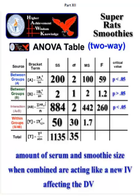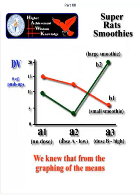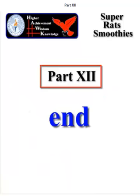And that's what's going on here, and we kind of knew that from the graph of the means way back when, right? We knew that there was main effect A, which was the serum, and we knew that there was no effect B, and that was the smoothie size, and we knew there was interaction. So again, main effect A: yes, main effect B: no, and interaction. And that's it for this one. MGZ out.